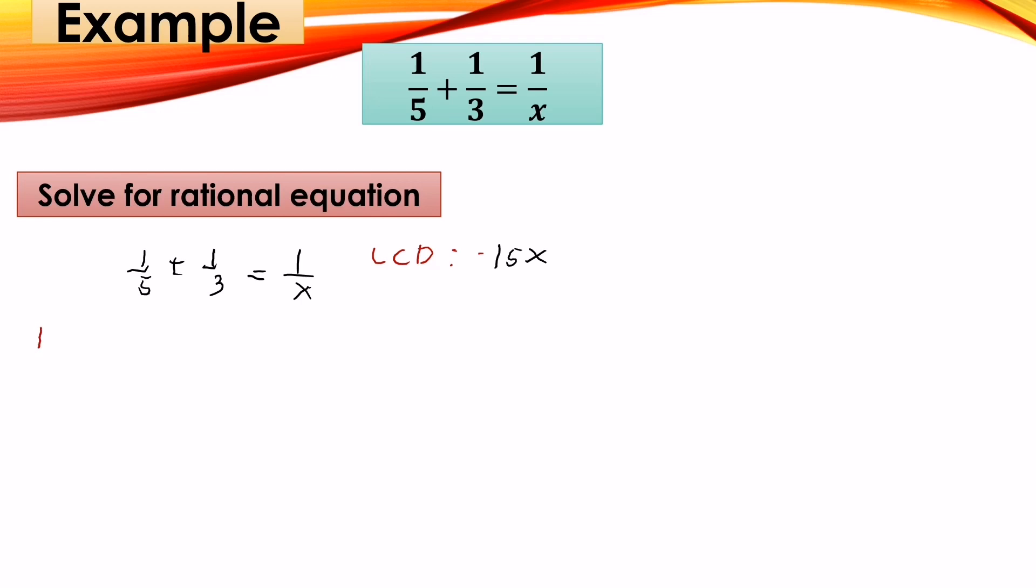So our LCD is 15x. Multiply 15x by 1/5. 15x multiplied by 1/3 is equal to 15x multiplied by 1/x. Then simplify.